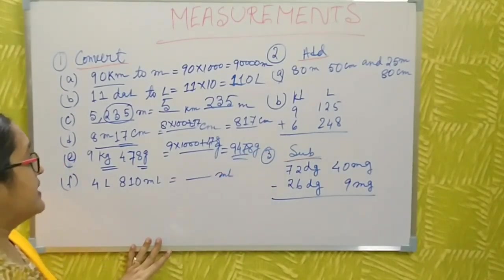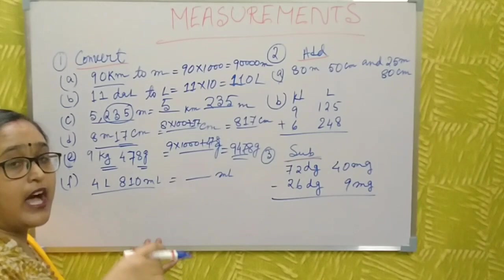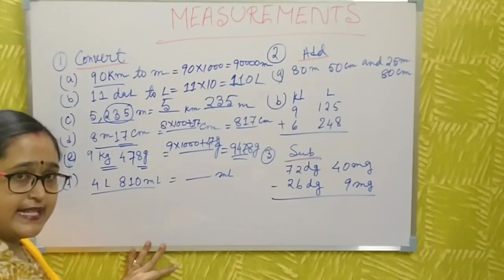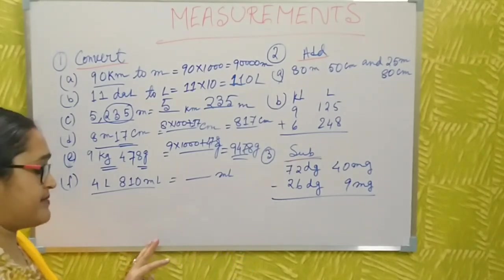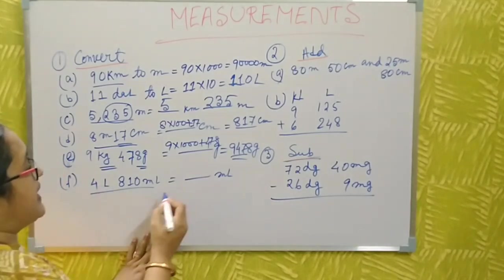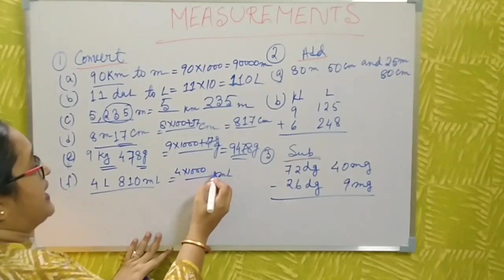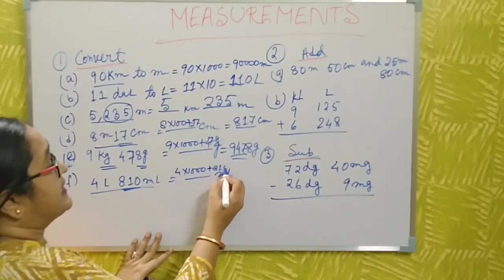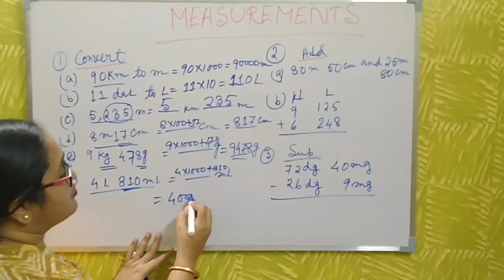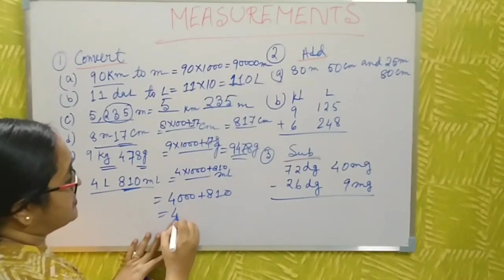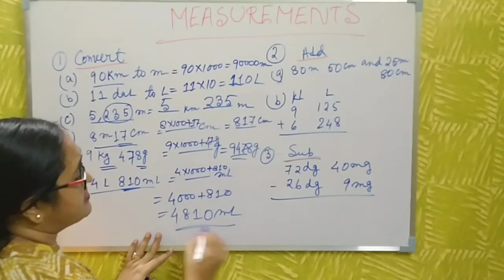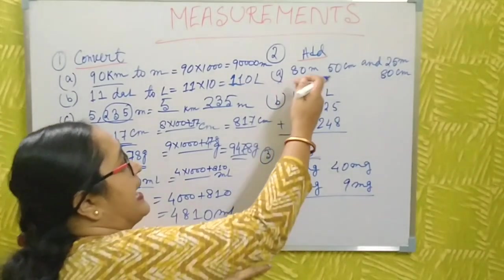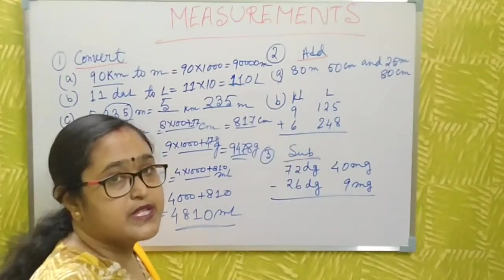Now, liter to milliliter: liter to deciliter, centiliter, milliliter — three steps down — so multiply by 1,000. For example, 4 liters 810 milliliters: 4 × 1,000 = 4,000 plus 810 = 4,810 milliliters. This is very easy, there is no confusion.